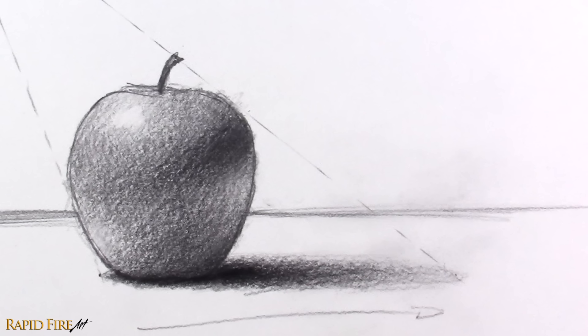Now outlines can make a drawing look cartoony, so make sure they blend in with your shading or erase them as you go along. Definitely try to make your initial sketches as light as possible so they don't show through in the end. If they're too dark to erase, you can shade a dark background until they disappear.